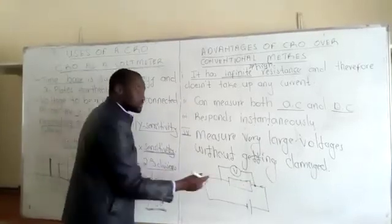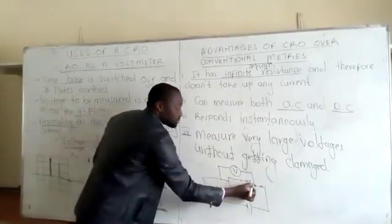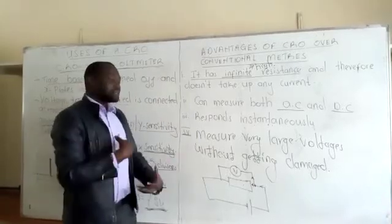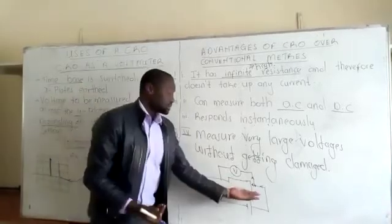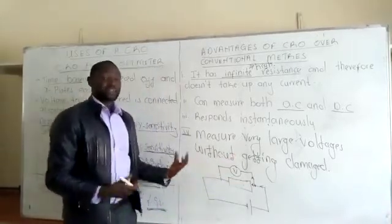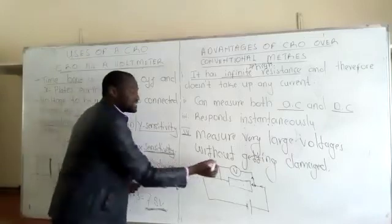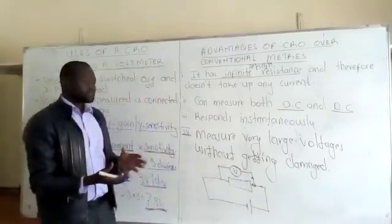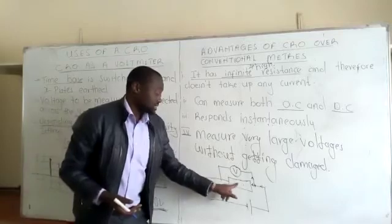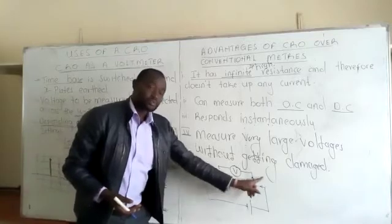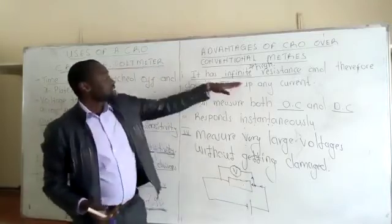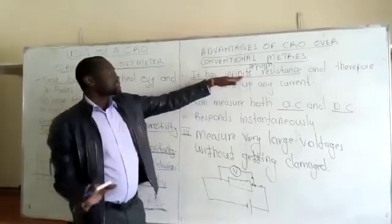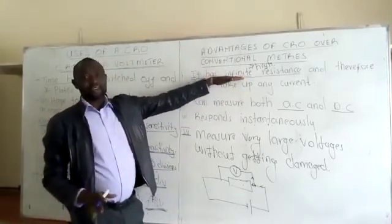But still some little current will flow through the path with high resistance. So the resistance of the voltmeter is not big enough to block all the current. But in the case of a CRO, the resistance is so high there is no current it will take from the circuit.